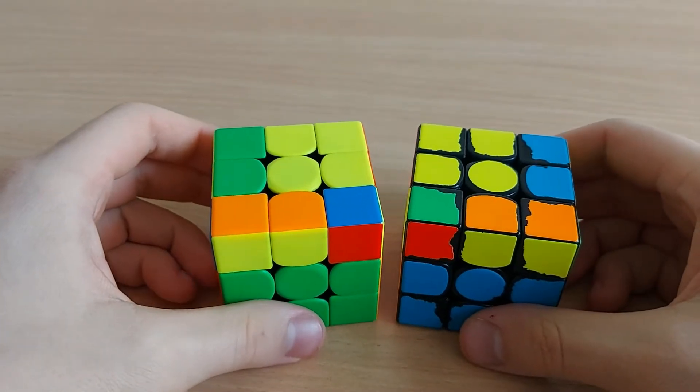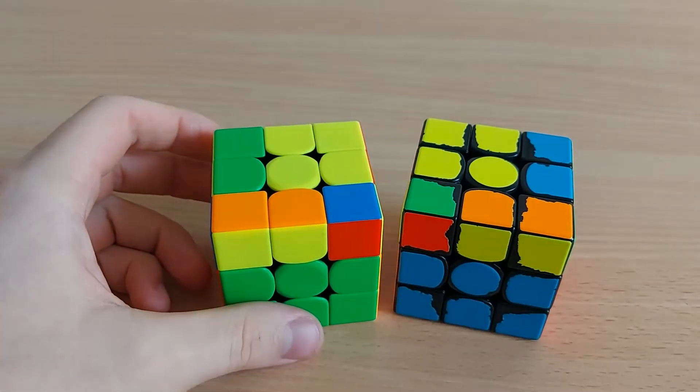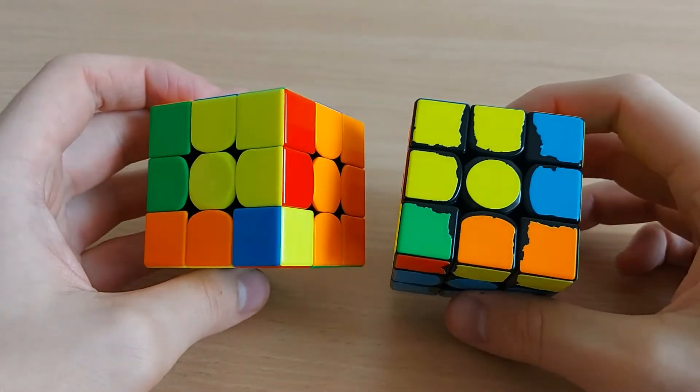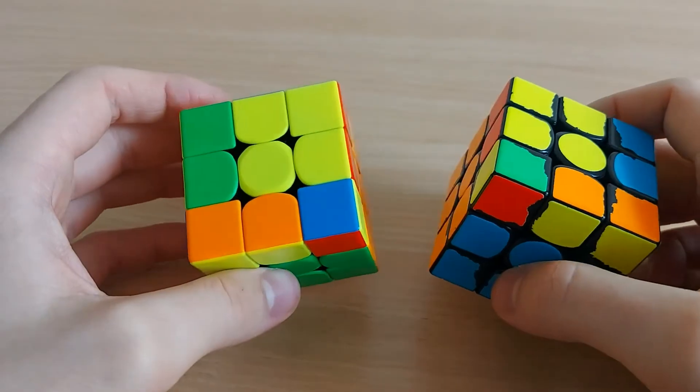Hi, today I'm going to show you square shape OLLs. So there are two cases and they are mirrors of each other.